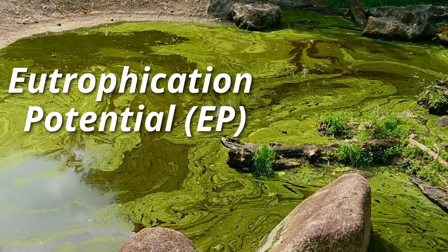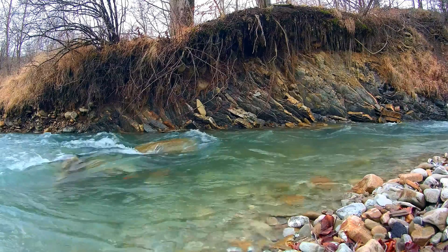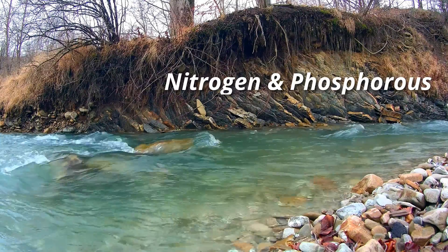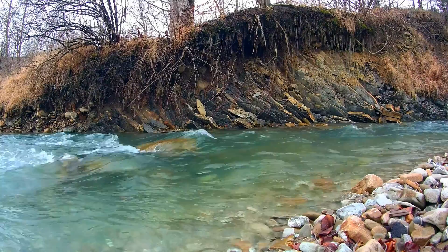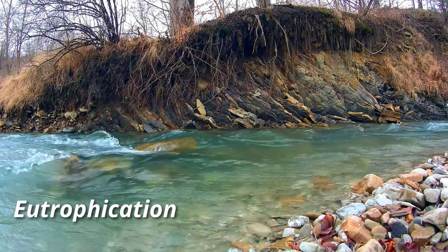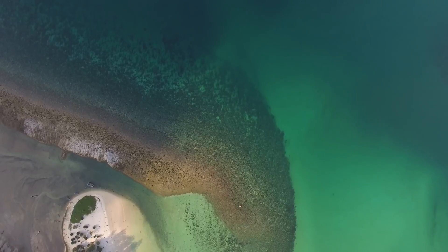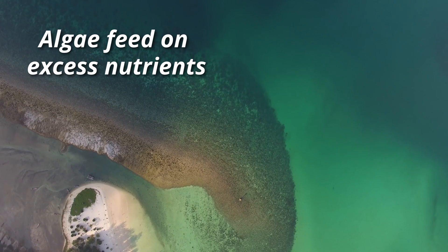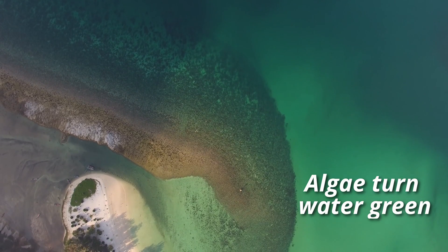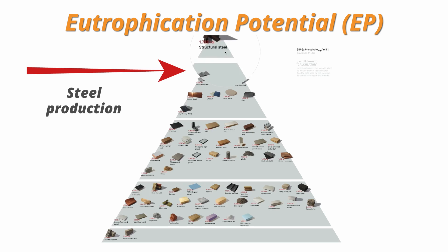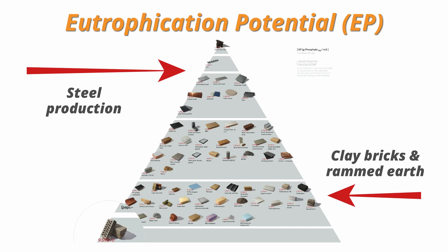Lastly is eutrophication potential. An unnatural increase in nutrients like nitrogen and phosphorus in water starts a process called eutrophication. Algae feed on the nutrients, growing and spreading, turning the water green. In large concentrations, these compounds can lead to algal blooms, tainted water supplies, and the death of fish. Steel production emits large amounts of nitrogen oxides compared to clay bricks.